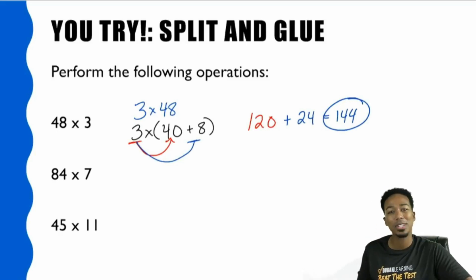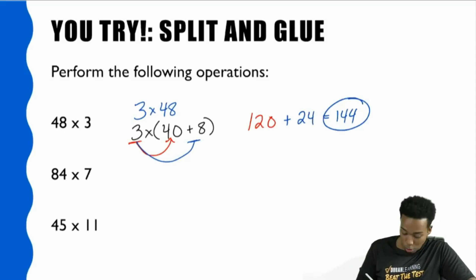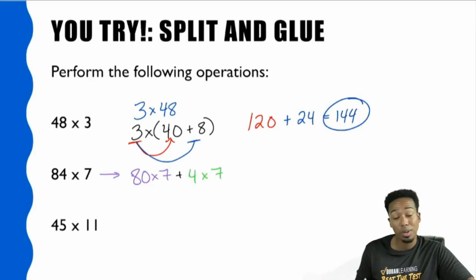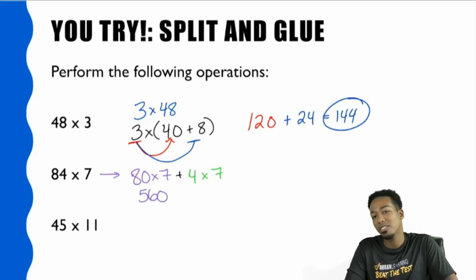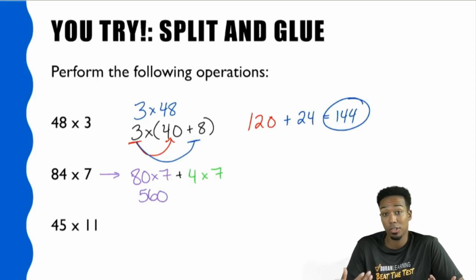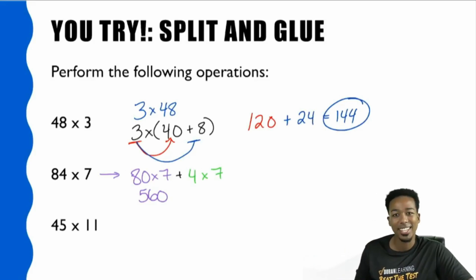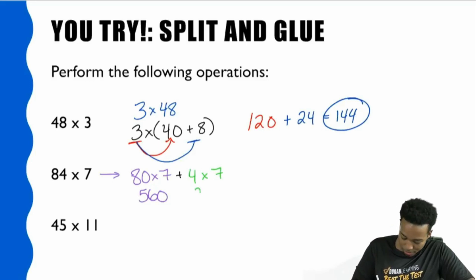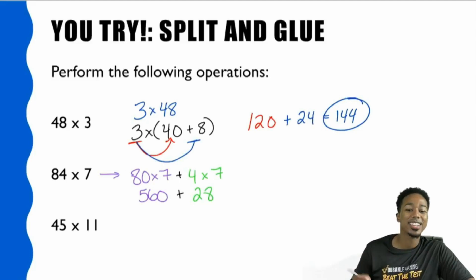Number 2 here, 84 times 7. Split and glue all day. If I'm splitting this up, I'm splitting this up into 80 and 4. So I'm essentially doing 80 times 7 and 4 times 7. 80 times 7 is going to give me 560. And the reason I know it's 560 is because 8 times 7 is 56. So if there's a 0 slapped at the end of the 8, so 80, it's going to be 56 with a 0 or 560. And then the 4 times 7, that's going to be 28. And then we glue it back together. So 560 plus 28, that's going to give us 588.